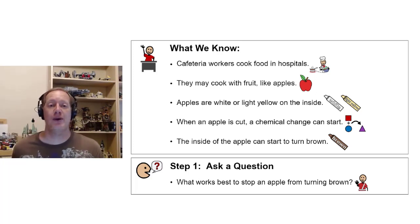With any science experiment, we need to start out by looking at what we know. So what do we know? Well, we know that cafeteria workers cook food in hospitals. We know that they may cook with fruit like apples. Apples are white or light yellow on the inside.